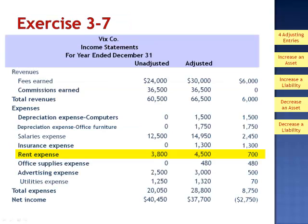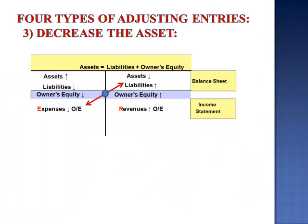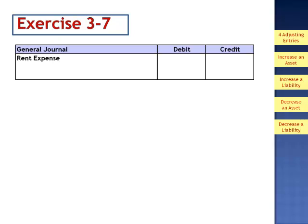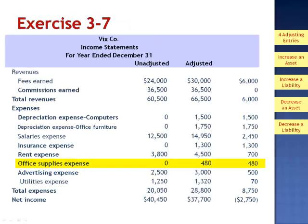The next line item is rent expense. Rent expense went from $3,800 to $4,500, increasing the expense by $700. Generally rent is paid in advance, so one might assume the adjusting entry was decreasing an asset — debiting rent expense and crediting prepaid rent. But in this case, the author's answer is a debit to rent expense for $700 and a credit to rent payable. This journal entry implies not that we had prepaid our rent, but that we're behind in our rent.